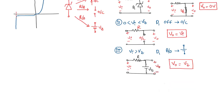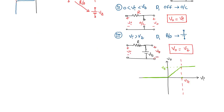Looking at the transfer characteristics of this circuit: the first region corresponds to Case 1, the second region corresponds to Case 2, and the third region corresponds to Case 3.